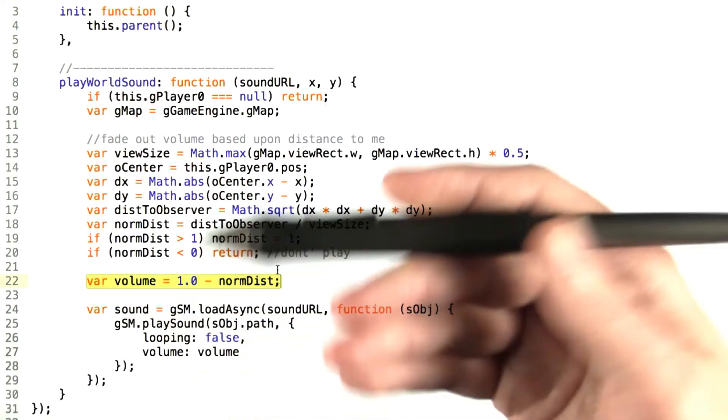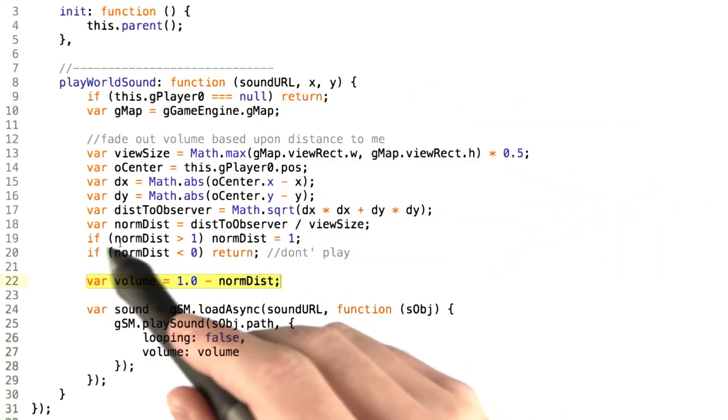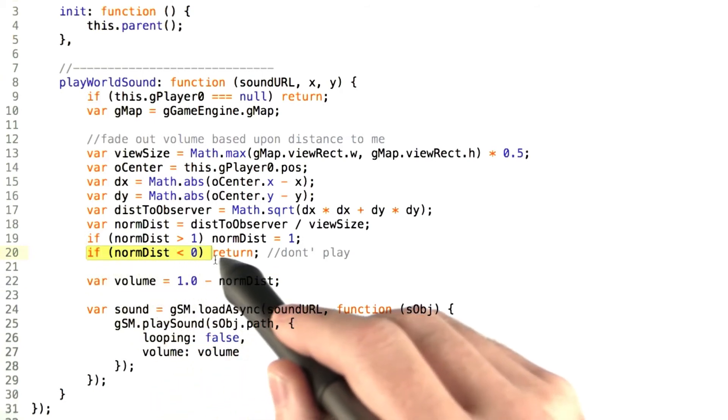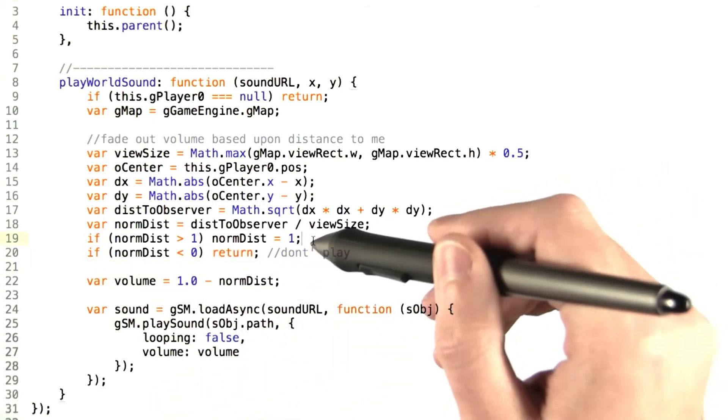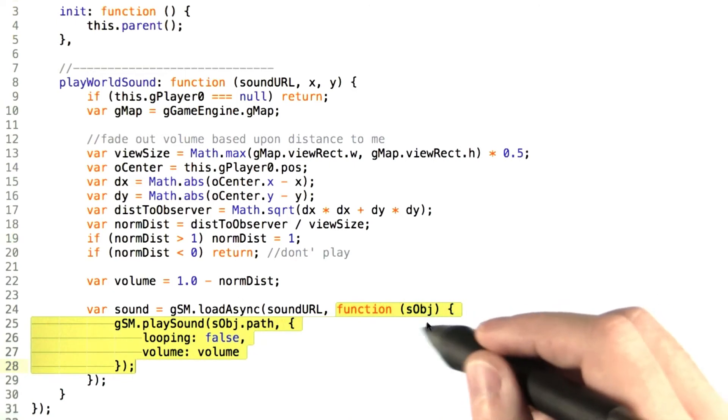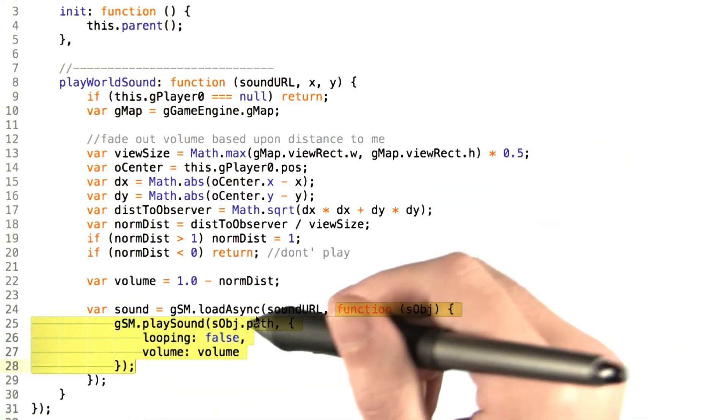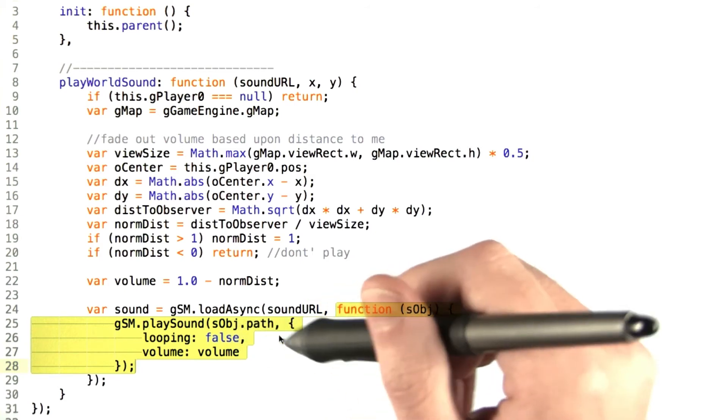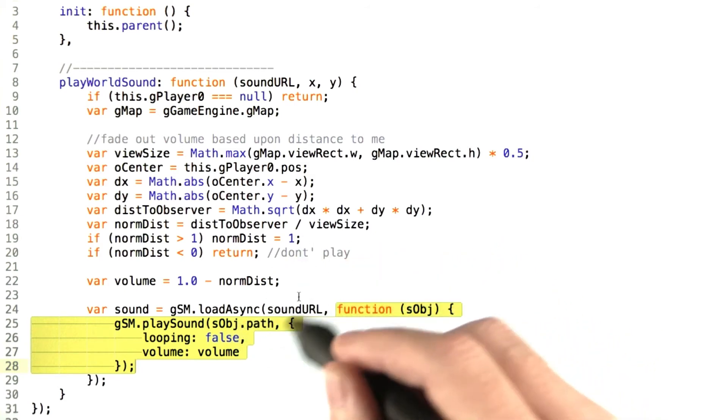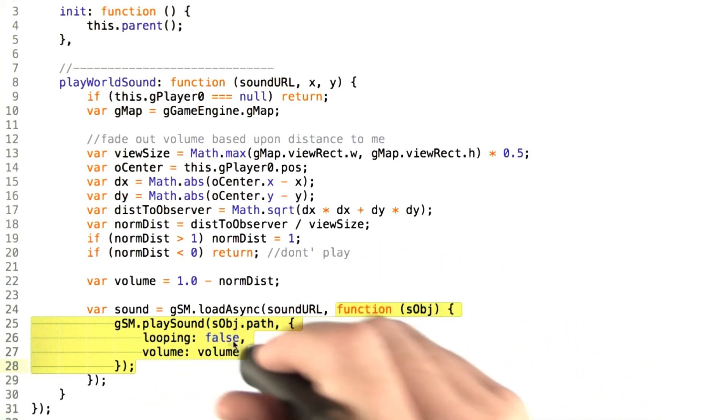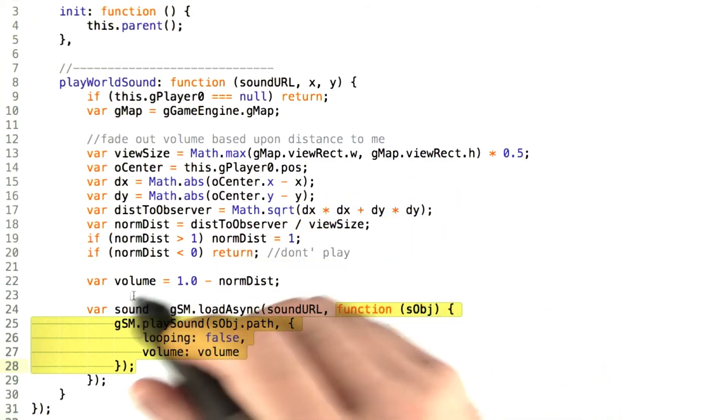If the norm distance is, for whatever reason, less than zero, then we simply return and don't play. Then we create a callback function and immediately call playSound on that sound object, the path of that sound object that is, with settings saying looping is false and the volume is the volume we have just calculated.